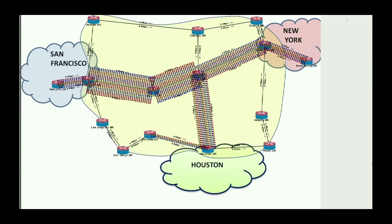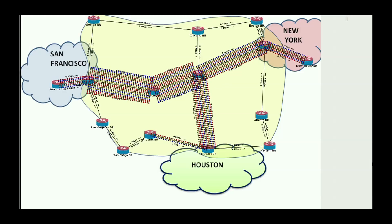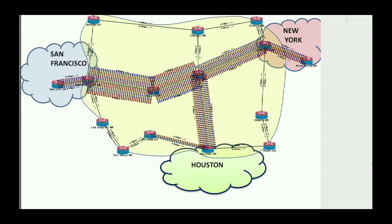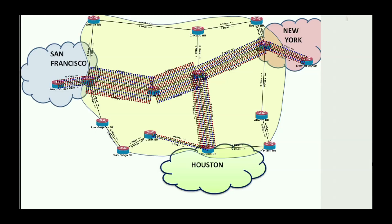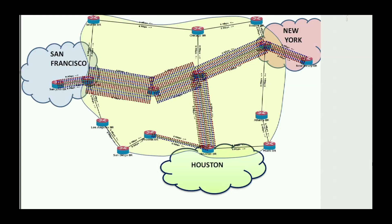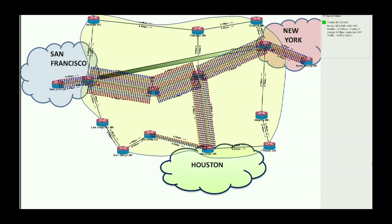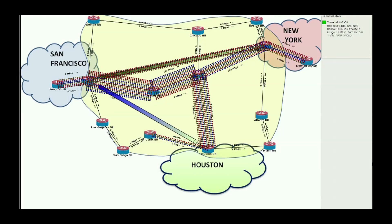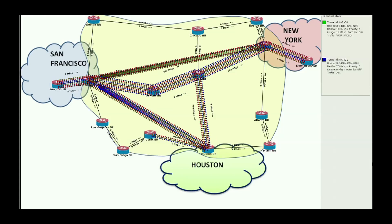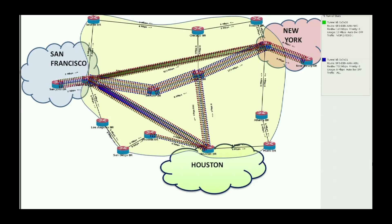Traffic engineering is the art of steering traffic over routes that are not necessarily the shortest path in the network. Amongst other things, it aims to avoid congestion and utilize network resources more efficiently. Our GUI shows flows for three different traffic types, represented by different colors in real time, originating in San Francisco and destined to New York, Kansas, and Houston. The traffic is initially routed just like in a regular IP network, based on the destination IP address and taking the shortest path. We start the traffic engineering process by creating tunnels between San Francisco and New York and between San Francisco and Houston. Notice that the traffic gets auto-routed from the IP links onto the tunnels.